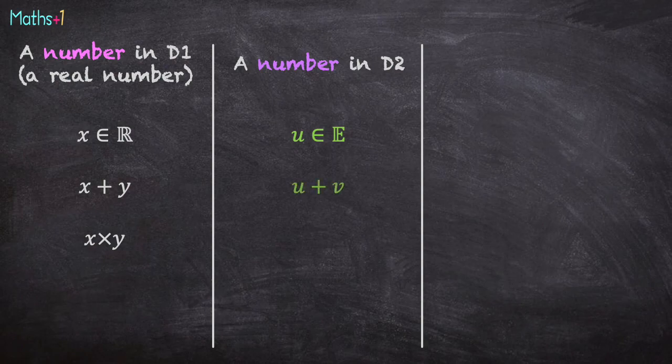It is possible to add two numbers, u plus v, and it is possible to multiply this kind of number by a scalar, a real number a. But what's about multiplication?